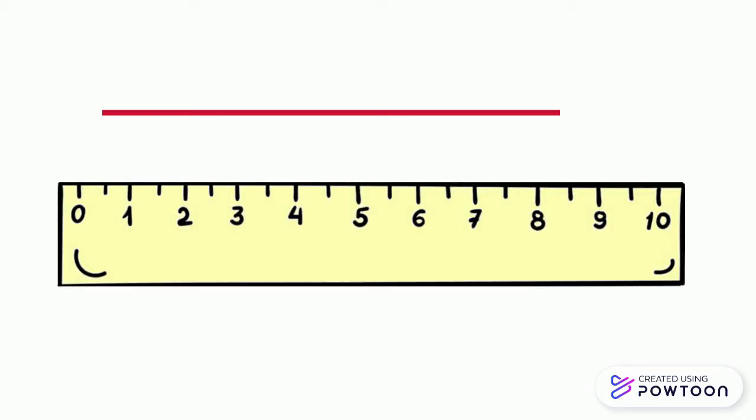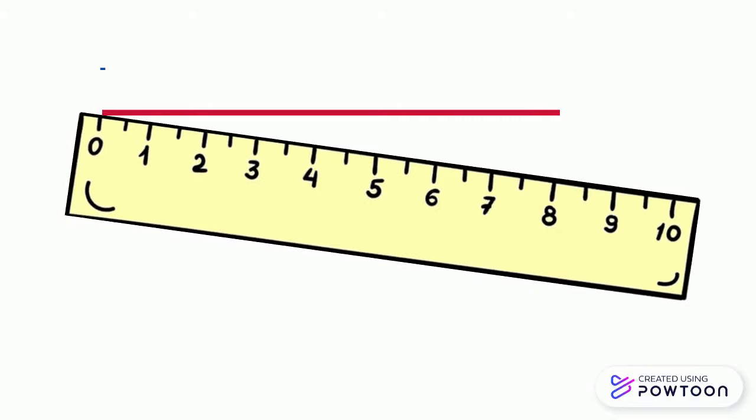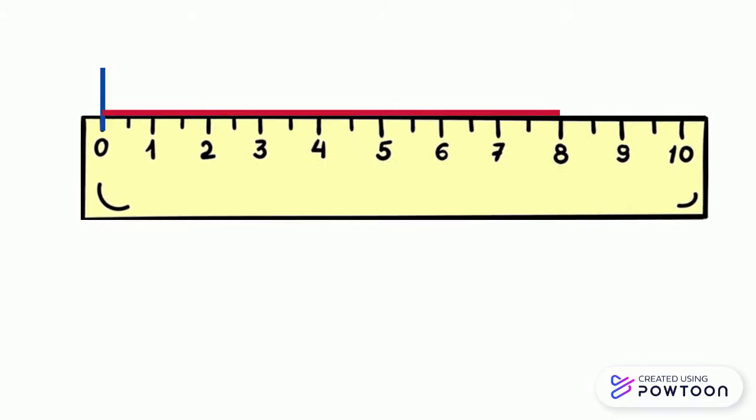How to measure the length of this segment? First of all, you should know that we should start from zero. This is the starting point of each measurement. To know the length of this segment, first we will stick the ruler under the segment, line it up and don't forget to start from zero.